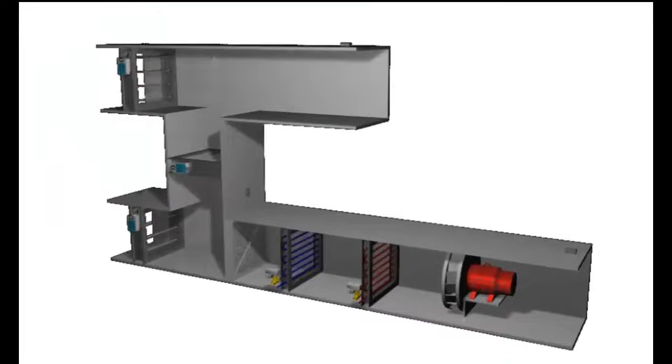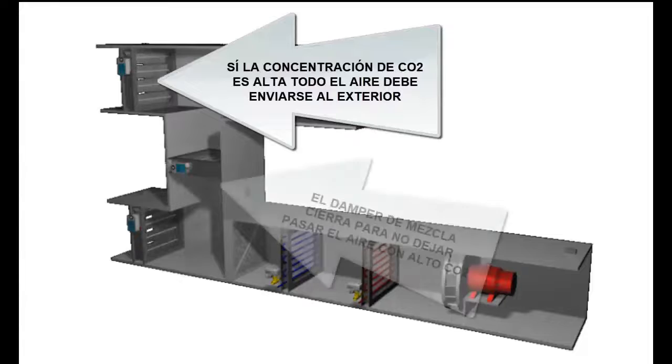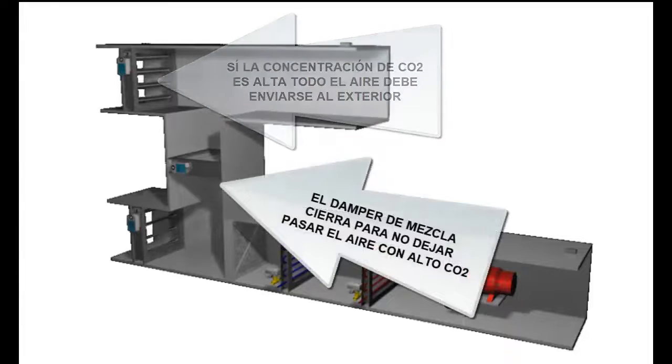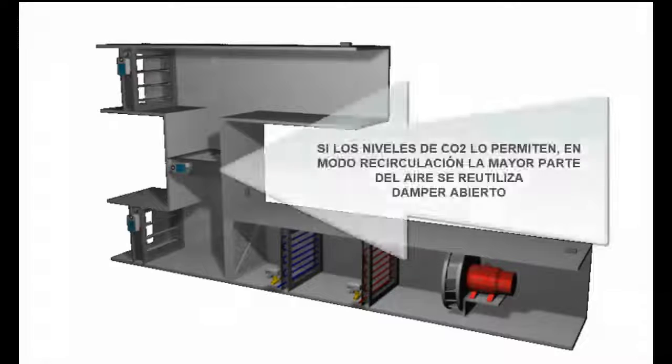16. In recirculation mode, the aim is to have the majority of the return air go back into the building. 17. Some buildings require 100% fresh air, so the recirculation strategy cannot be used everywhere.